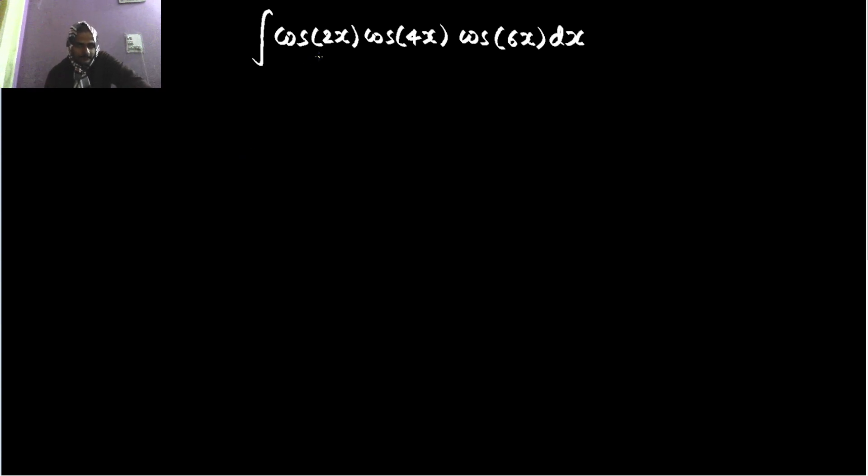In this type of problem we can take two at a time and then solve. Because all cos are there, this formula you should remember: cos of a plus b, cos of a minus b divided by two.